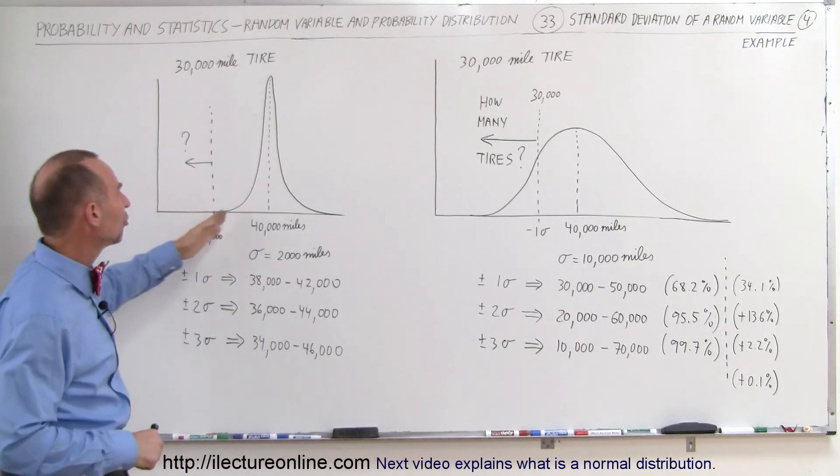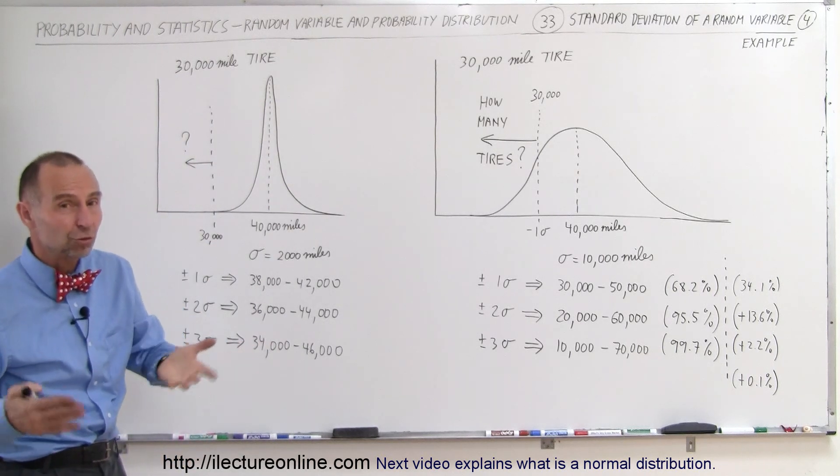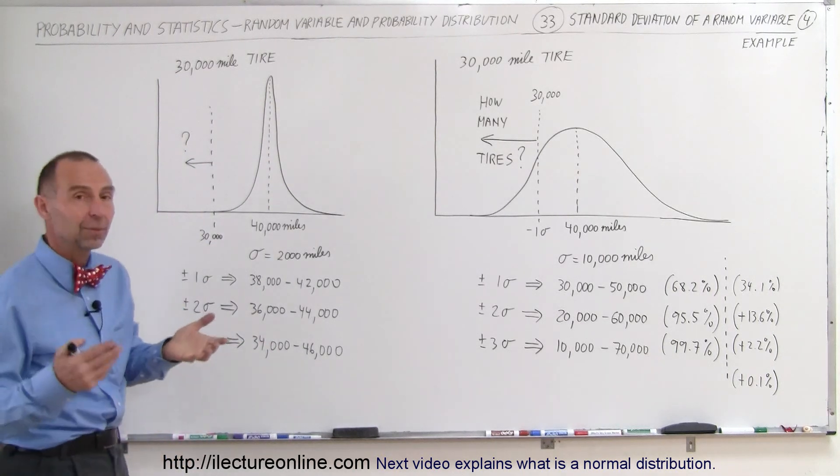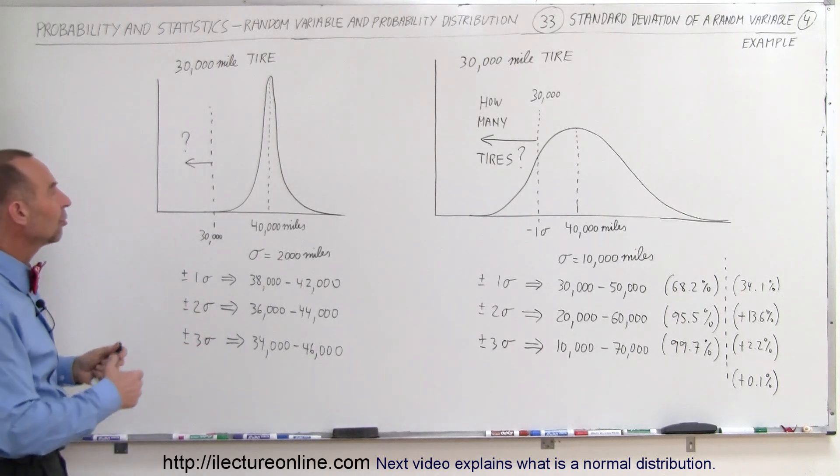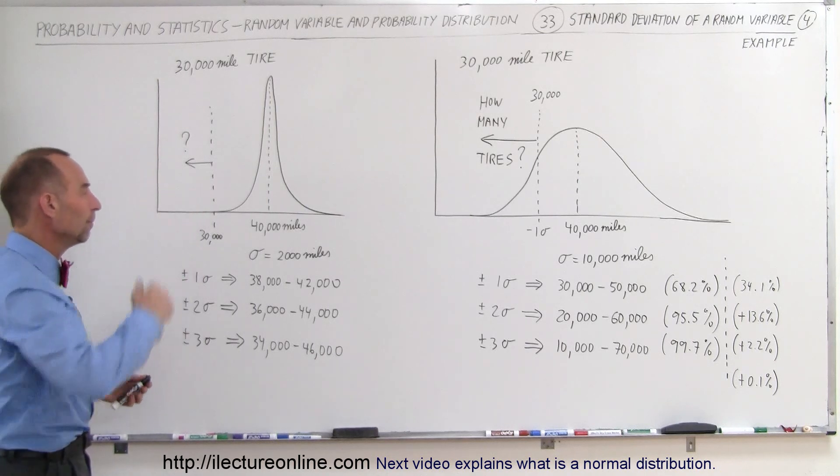So here you can see a distribution, which is a normal distribution. Let's say that these companies produce a million tires of a particular type every year. And so you can see that if you produce a large quantity of something, your distribution will look fairly normal.